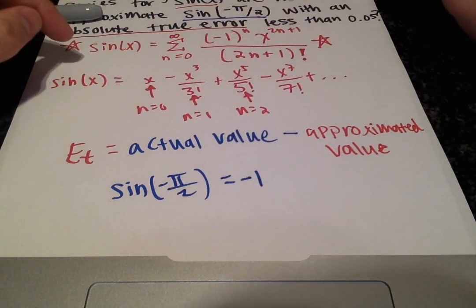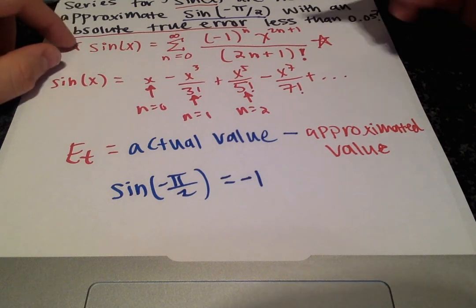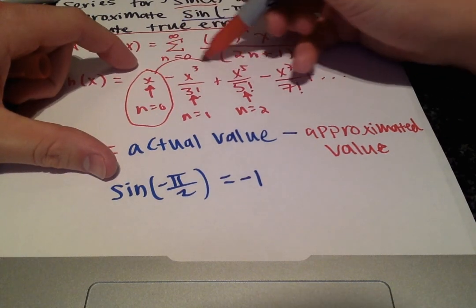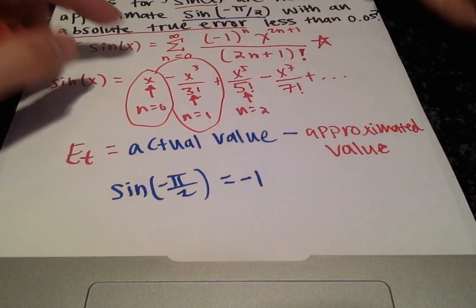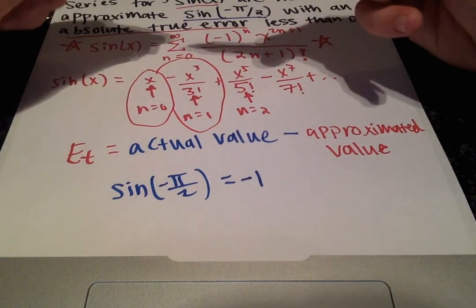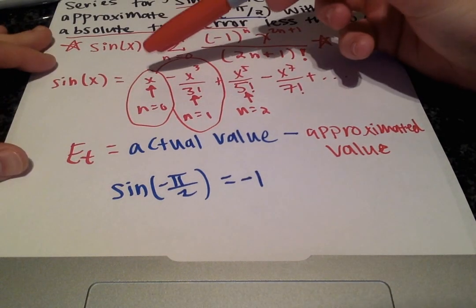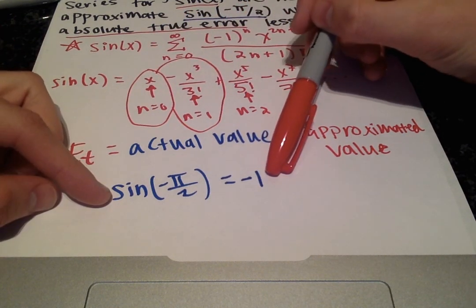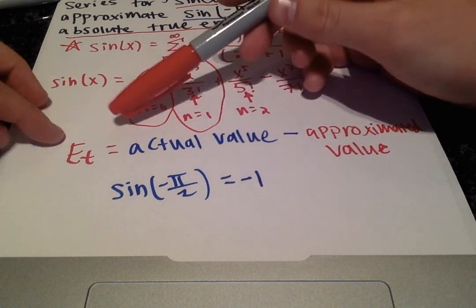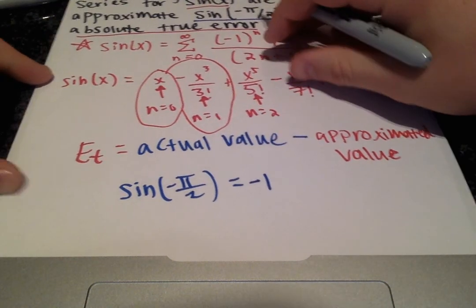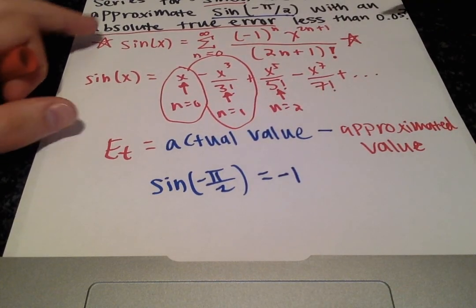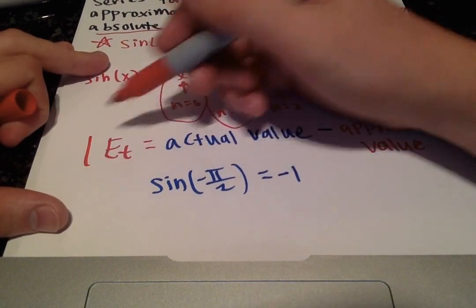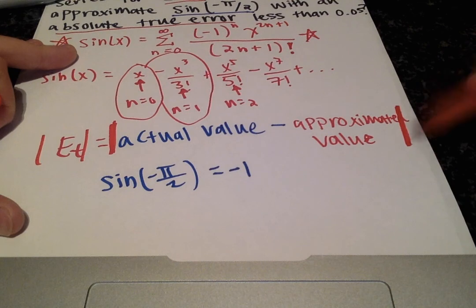With one term the Taylor series approximation is just x; with two terms you have x minus x cubed over 3 factorial, and so on. We keep adding terms until we get within the accepted value for the absolute true error, which is just the absolute value of the true error.